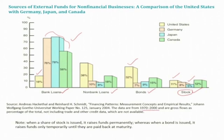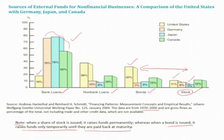We should not make a direct comparison between bond share and stock share, because when a share of stock is issued, it raises funds permanently, whereas when a bond is issued, it raises funds only temporarily until they are paid back. So a direct interpretation of this figure may be misleading.